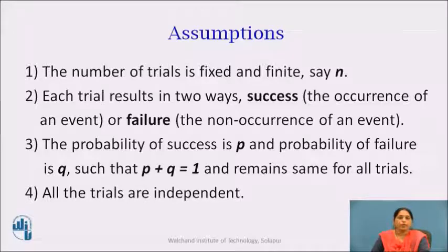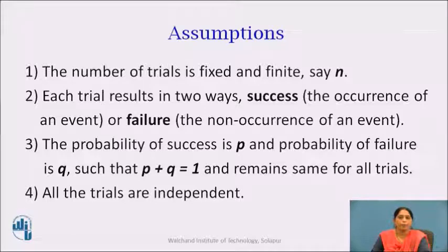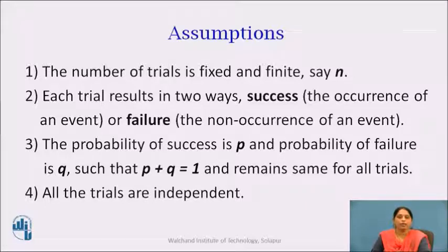The binomial distribution can be applied for any experiment if it satisfies these assumptions. The assumptions are: the number of trials is fixed and finite, say small n. Each trial results in two ways — success, the occurrence of an event, or failure, the non-occurrence of an event. The probability of success is small p and the probability of failure is small q, such that p plus q equals 1, and remains the same for all the trials, and all the trials are independent.